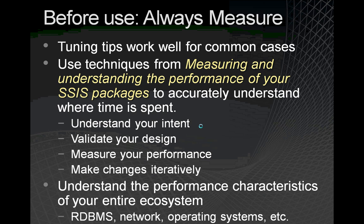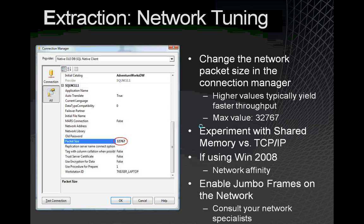We'll start where your data flow does, with extraction. When using SQL Server or any other database with a bulk interface as your source, you should experiment with increasing the packet size. Normally, the SQL Server default of 4096 works well, but since your extraction is going to be moving large amounts of data, bumping this up should help. For this to take effect, you'll want to ask your network admin to enable jumbo frames on your network as well.